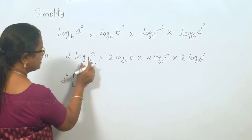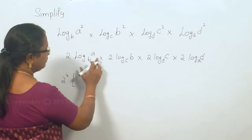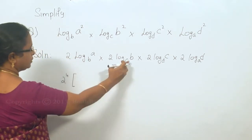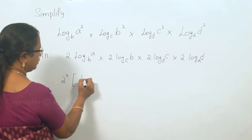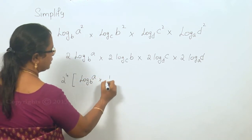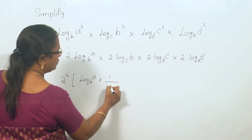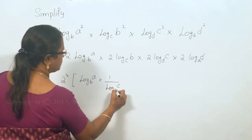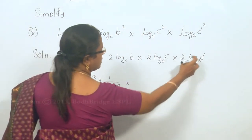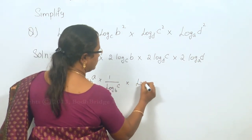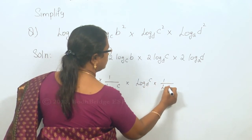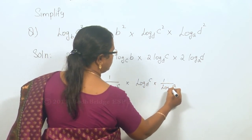Now, what do we have inside? We can make the same base here. We can write in terms of b as a base, so this is log a base b into 1 by log c base b. Similarly, here we can make d as a base, so this is log c base d into 1 by log a to the base d.